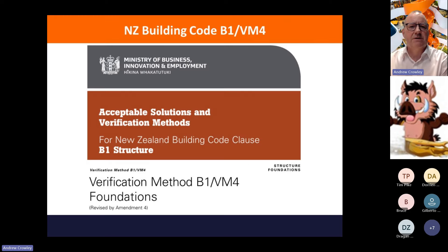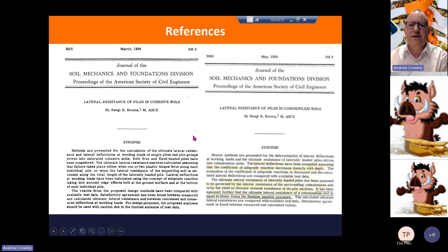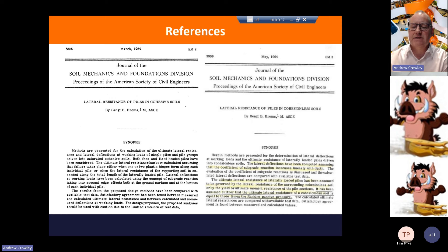I'm going to be looking at the structural design of piles only today, so we're not covering slope stability analysis or deep-seated rotational failure. These need to be considered when designing retaining walls, particularly on slopes. For a quick snapshot of New Zealand Building Code VM4 — part of the structural part of the New Zealand Building Code — the references are found in old journals from 1964 by Bent Bronze about lateral resistance of piles: one in cohesive soils and the other in cohesionless soils. It's one of many methods for designing piles, but it's quite popular, particularly in New Zealand, as it's already embedded in the building code.